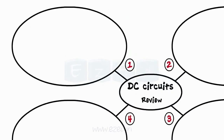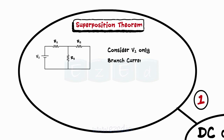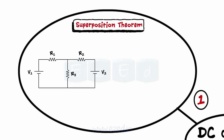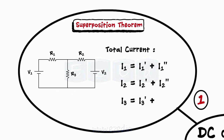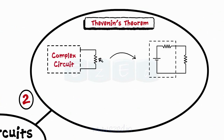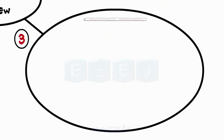Let's review what we've learnt in this chapter. There are four theorems that give simplified methods to analyse circuits. First is the Superposition Theorem, in which we consider only one source at a time, calculate all the branch currents, then consider the second source only, again calculate the branch currents, and finally perform algebraic addition of currents to find the net current flowing through a particular branch. Thevenin's Theorem is second: we replace the complex circuit except the load resistor with the Thevenin's equivalent circuit, then use Ohm's law to find the current through the load resistor. Vth is the voltage across the load terminals calculated by KVL, and Rth is the equivalent resistance of the network seen from the load terminals without the load resistance.